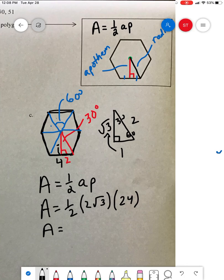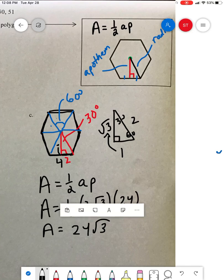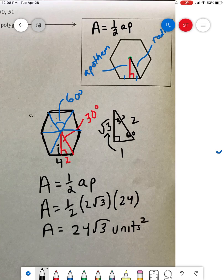Well, half of 2 is 1, and 1 times 24, 24 radical 3, and they're units, so let's call it units squared.